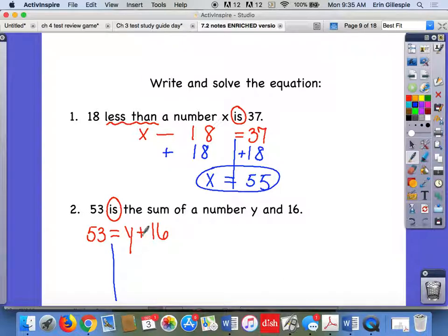So here's my variable. I want it to be opposite. I'm going to subtract 16 from both sides. That's going to give me Y equals 37. All right. Those are your notes. So once those are all completely filled in and you feel like you understand it, go ahead and see the substitute teacher for your worksheet for homework.